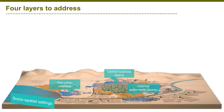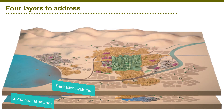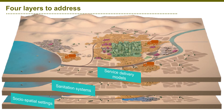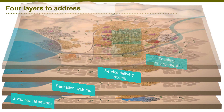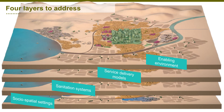We thus need to understand these four layers: the social-spatial settings, the existing and potential sanitation systems, the related services, and finally the enabling environment to make it happen.